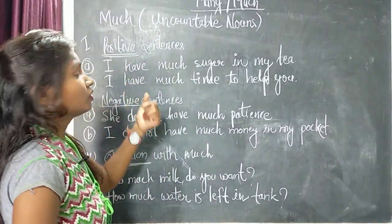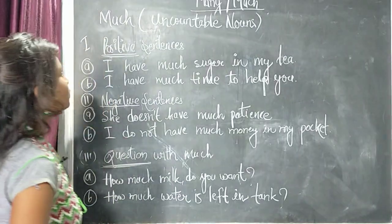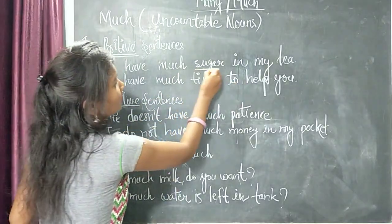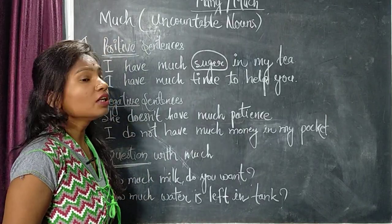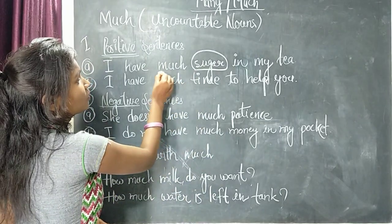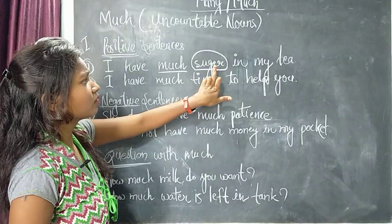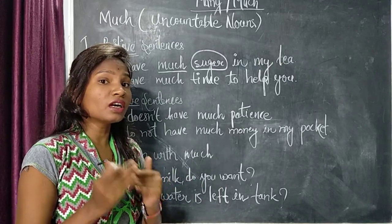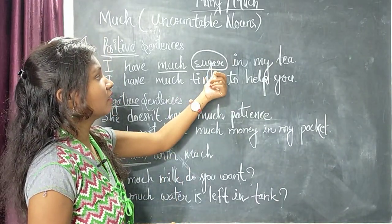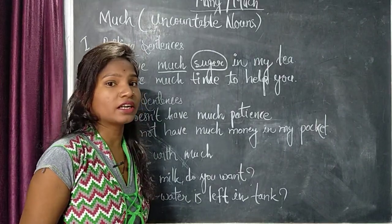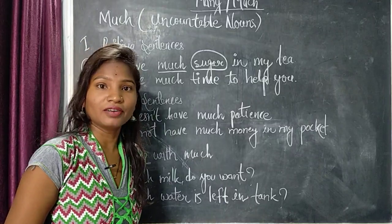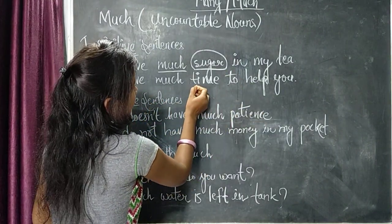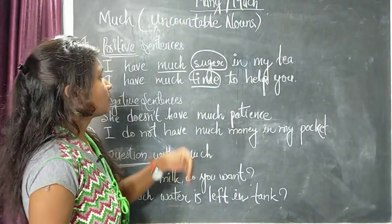Like many, much is also used in positive sentences, negative sentences, and question sentences. First example — positive sentence: 'I have much sugar in my tea.' Sugar is an uncountable noun. Notice that sugar does not have S or ES added with it — that is a very good way to identify whether to use many or much. Second example: 'I have much time to help you.' Time is also an uncountable noun, so we use much.